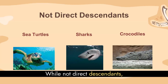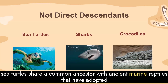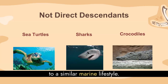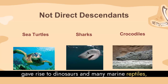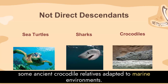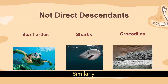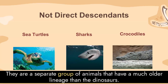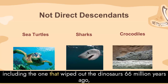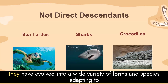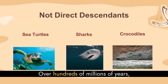While not direct descendants, sea turtles share a common ancestor with ancient marine reptiles that adapted to a similar marine lifestyle. Modern crocodiles are also relatives of the ancient archosaurs, the group that gave rise to dinosaurs and many marine reptiles. Some ancient crocodile relatives adapted to marine environments. Similarly, sharks are not dinosaurs — they are a separate group of animals with a much older lineage than the dinosaurs. Sharks have survived multiple mass extinction events, including the one that wiped out the dinosaurs 66 million years ago, and have evolved into a wide variety of forms and species, adapting to different marine environments over hundreds of millions of years.